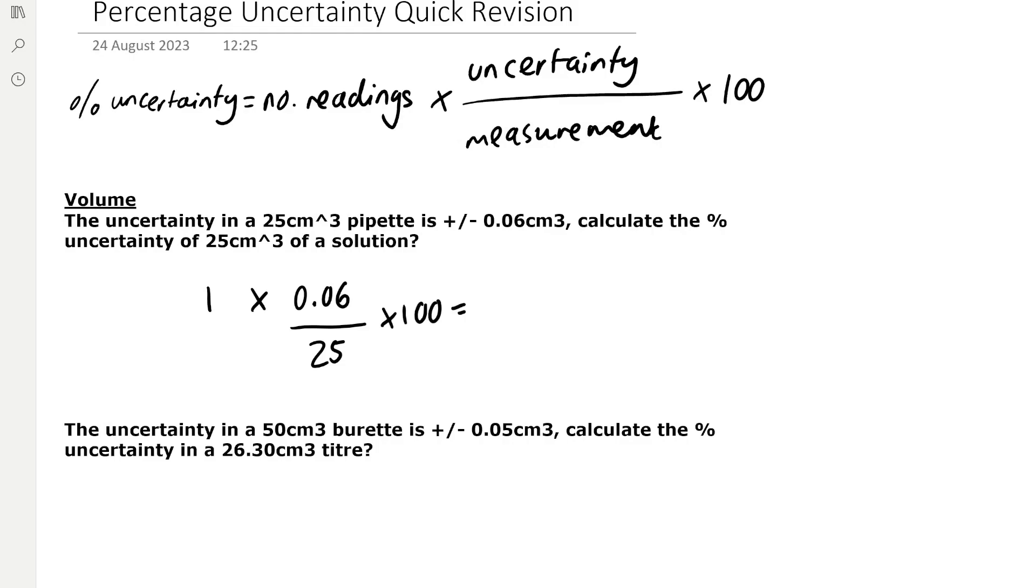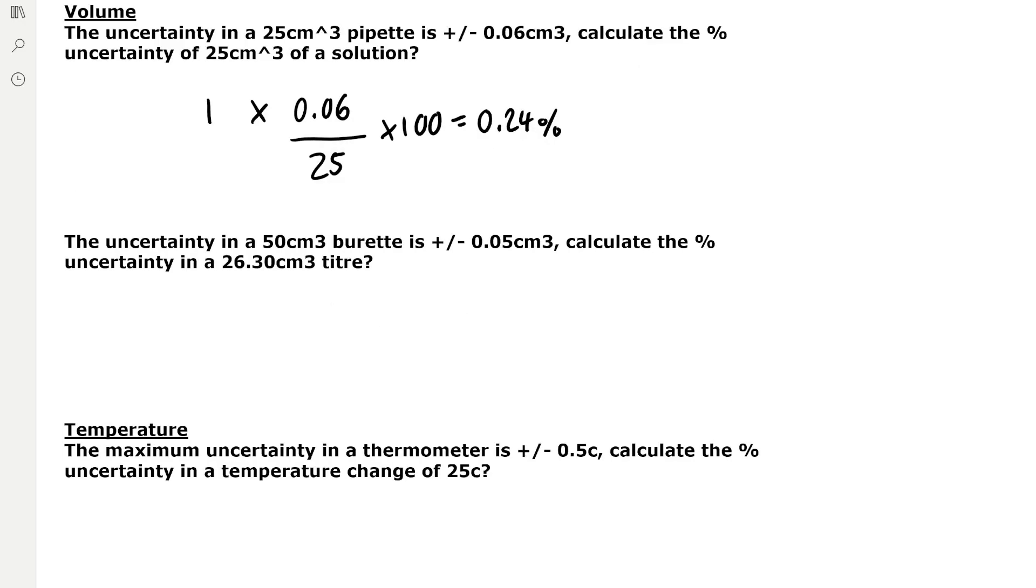And then for the next calculation, the uncertainty in a 50 centimeter cubed burette is plus or minus 0.05 centimeters cubed. Calculate the percentage uncertainty in a 26.3 centimeter cubed titre. So when we're taking a titration, we always do our final and initial measurements.